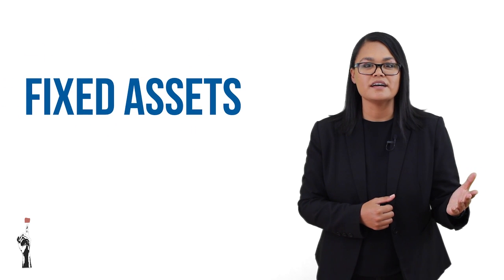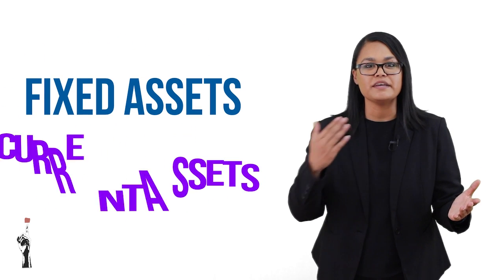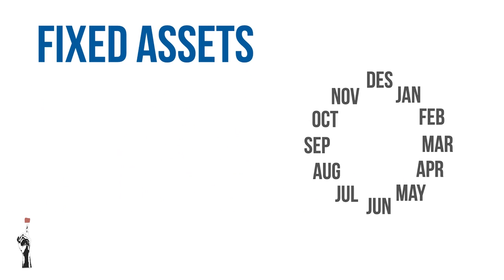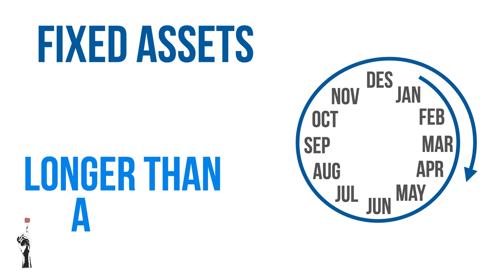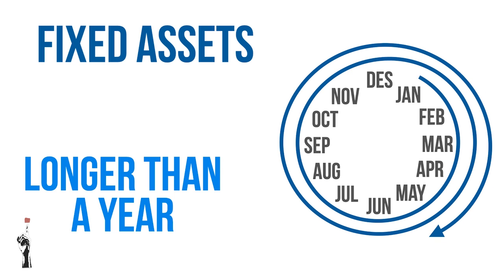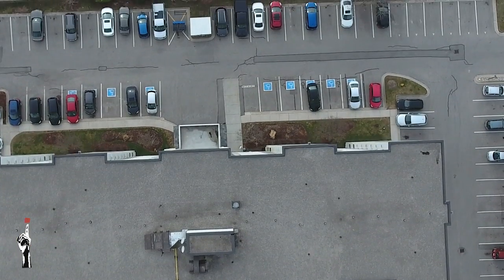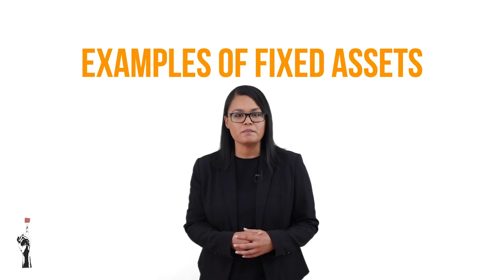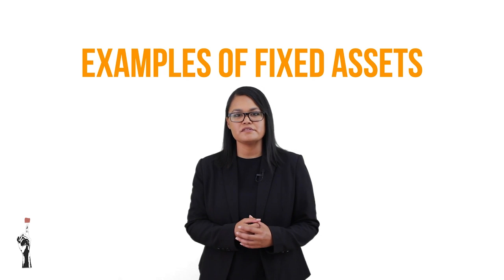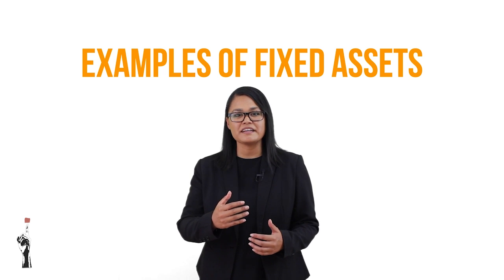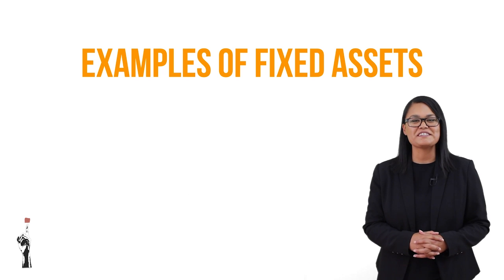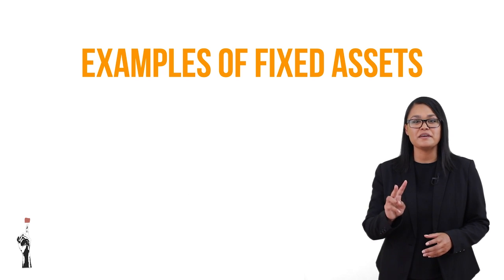There are two different types of assets. You get fixed assets, which are called non-current or tangible assets, and you get current assets. Fixed assets are assets whose life expectancy is longer than a year — in other words, the possession should last longer than a year. An example of this would be if Cyril buys a building for the salon where he operates the business from, rather than renting a building from someone else. The building will then be a fixed asset. Can you think of more examples of fixed assets? Try to write down at least two examples.